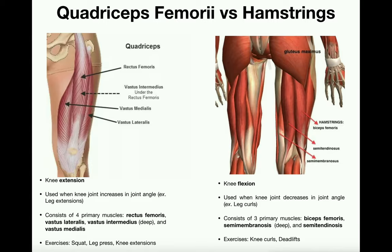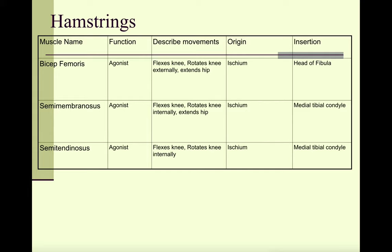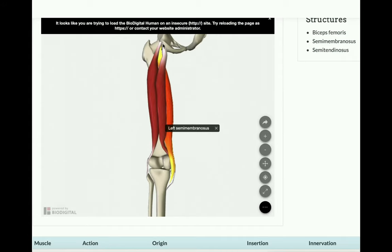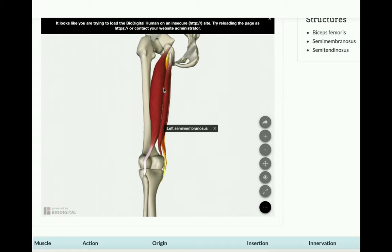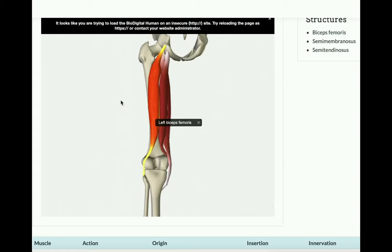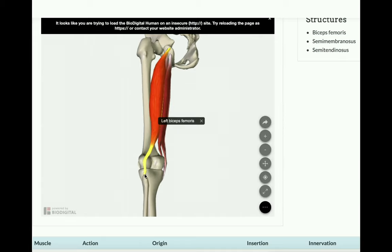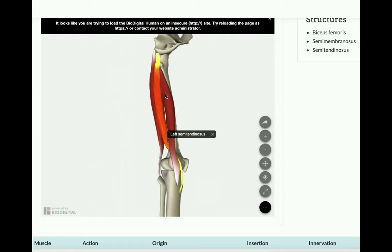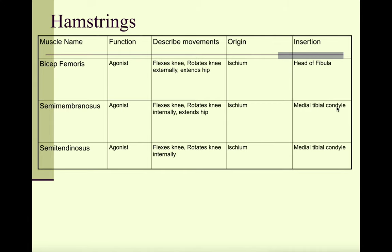All three hamstring muscles have their origin at the ischium. Looking at the biceps femoris — the most lateral — it inserts at the head of the fibula. Whereas the other two, the semitendinosus and the semimembranosus, actually insert on the medial tibial condyle. So they have different insertions than the biceps femoris.